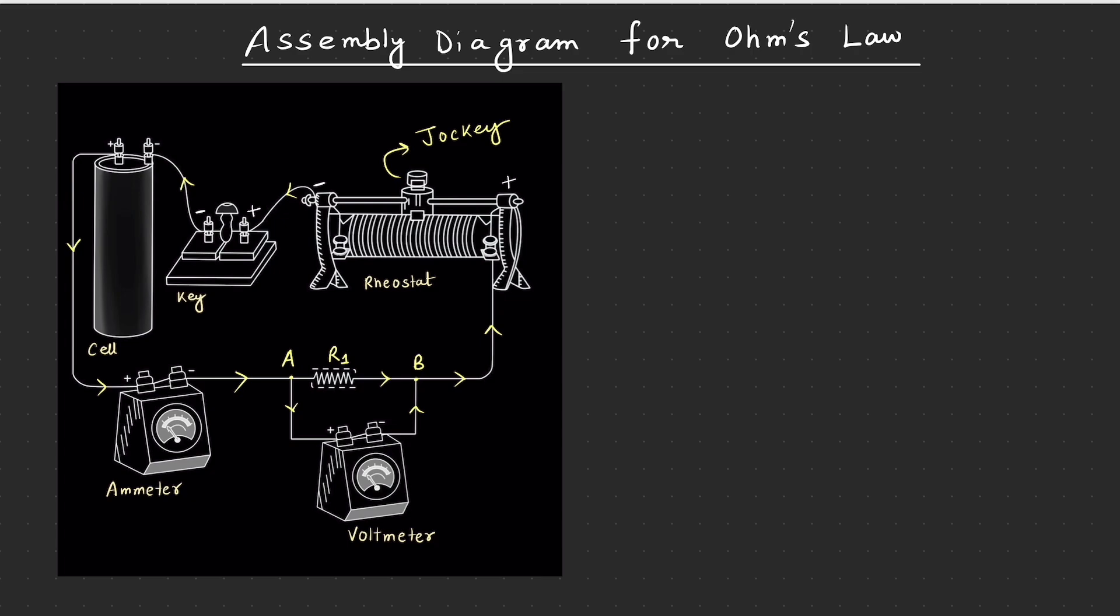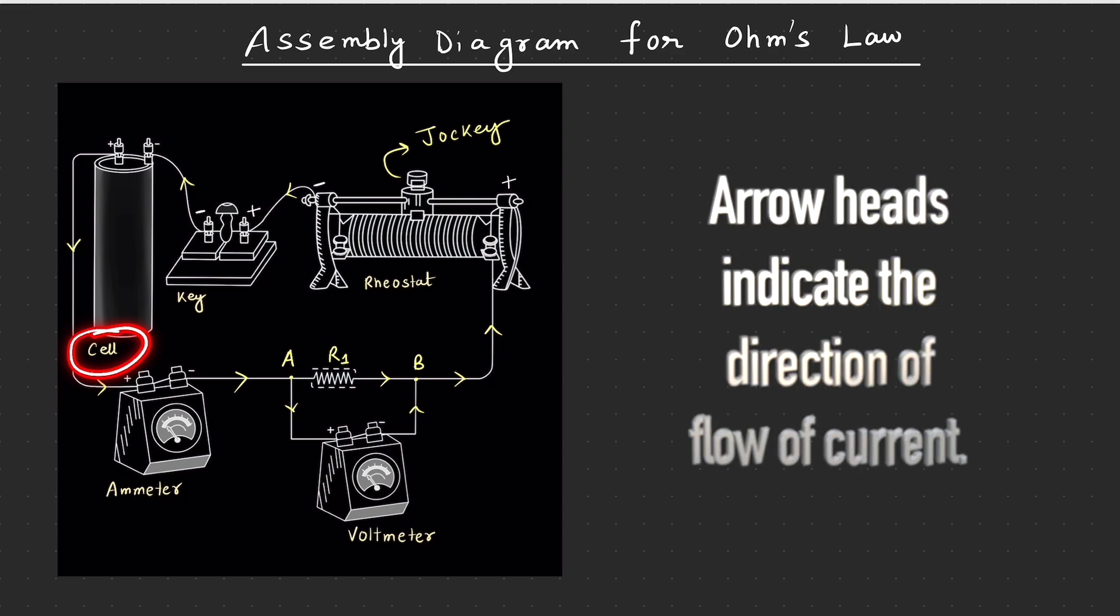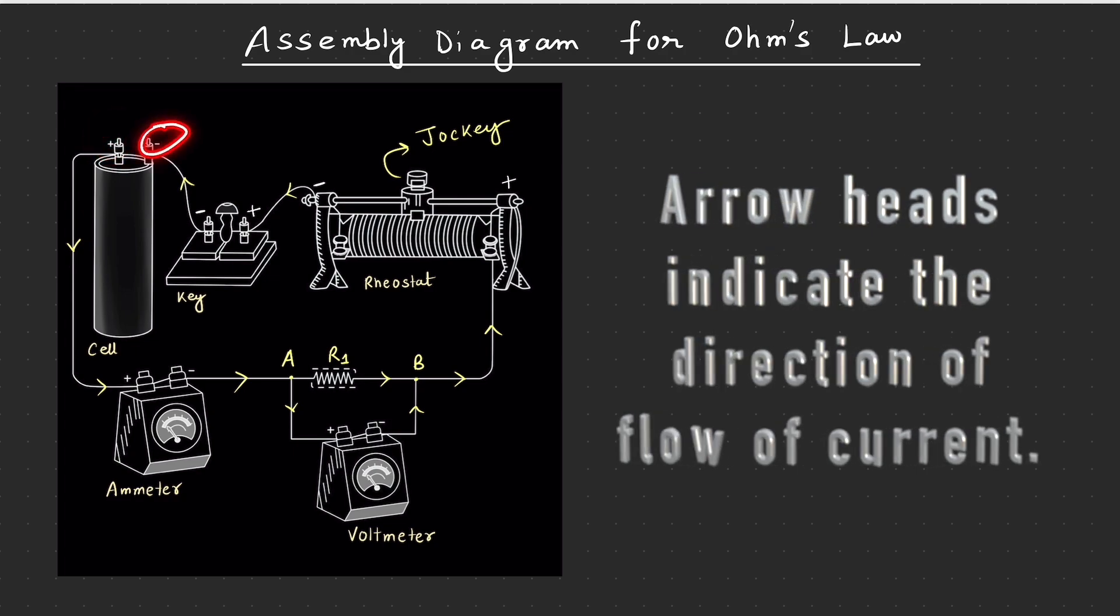To chalye, let's focus on the diagram. Assembly diagram of Ohm's law, ismeh joh pehla component hume chahiye, that is the cell. Ek cell kya karta hai? Basically, yeh current supply karta hai. Iske paas ek positive terminal aur ek negative terminal hai, which is being indicated by this plus and minus sign.